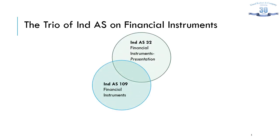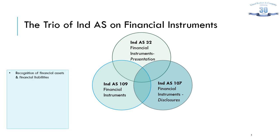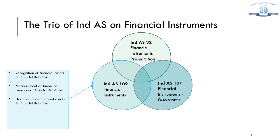The financial instrument standard is a trio of three accounting standards. As with any concept in accounting standards, everything begins with recognition — when is the financial instrument included in the entity's balance sheet — followed by initial measurement, subsequent measurement, and eventually derecognition. These three aspects are dealt with by IND AS 109. But before recognition or derecognition, it is important to understand what the instrument gets classified as: is it equity or liability in nature? These aspects are dealt with by IND AS 32, which deals with classification of liability and equity.